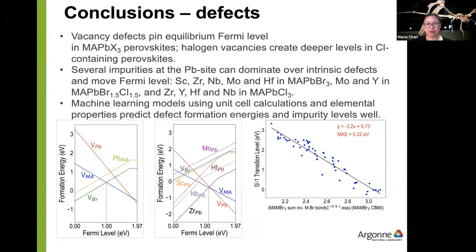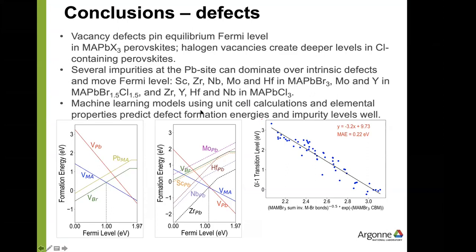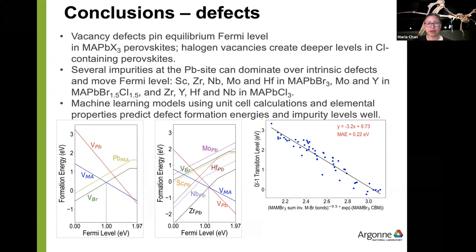How large would you like the bandwidth to be for an intermediate band to work, and how large was it in your case? We have not done the statistics on how wide the states are in the DOS. I think if I recall correctly, we looked into the requirements and they want something like 0.2 eV or so. Just by examining the DOS, most states in the mid-gap are pretty sharp. There's a question in the chat about the methylammonium calculation. We did pseudo-cubic calculations where the methylammonium atoms are aligned. There will certainly be variations if one chooses a larger sampling with arbitrary MA rotation or octahedral rotation — that would give more variation in the results.